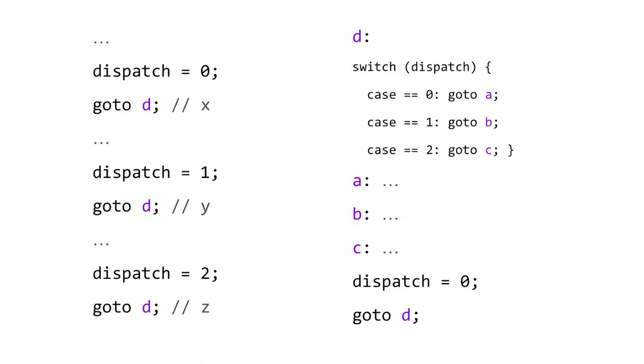As a result of this transformation, we're incurring an extra indirection in terms of control flow and an extra dynamic check.